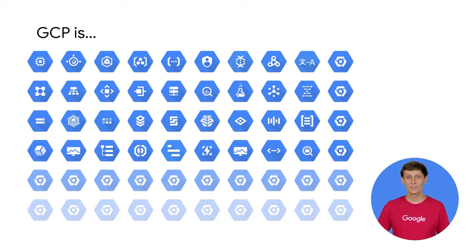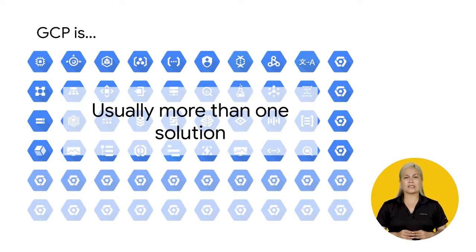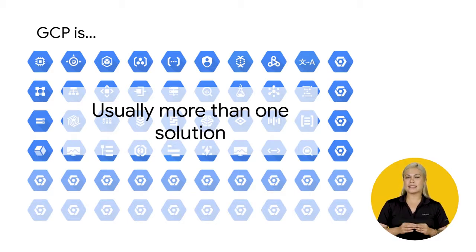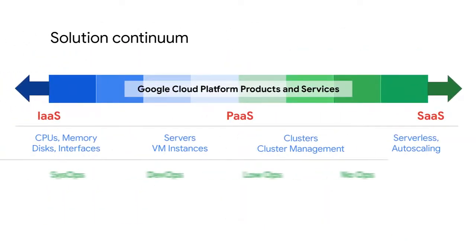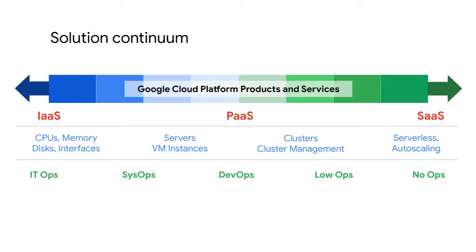On top of this infrastructure, GCP uses state-of-the-art software defined networking and distributed systems technologies to host and deliver your services around the world. These technologies are represented by a suite of cloud-based products and services that is continuously expanding. Many of the products and services are represented by unique blue hexagonal logos, such as the ones shown here. Now, it's important to understand that there is usually more than one solution for a task or application in GCP. To better understand this, let's look at a solution continuum. Google Cloud Platform spans from infrastructure as a service, or IaaS, to software as a service, or SaaS. You really can build applications on GCP for the web or mobile that are global, auto-scaling, and assistive, and that provide services where the infrastructure is completely invisible to the user.